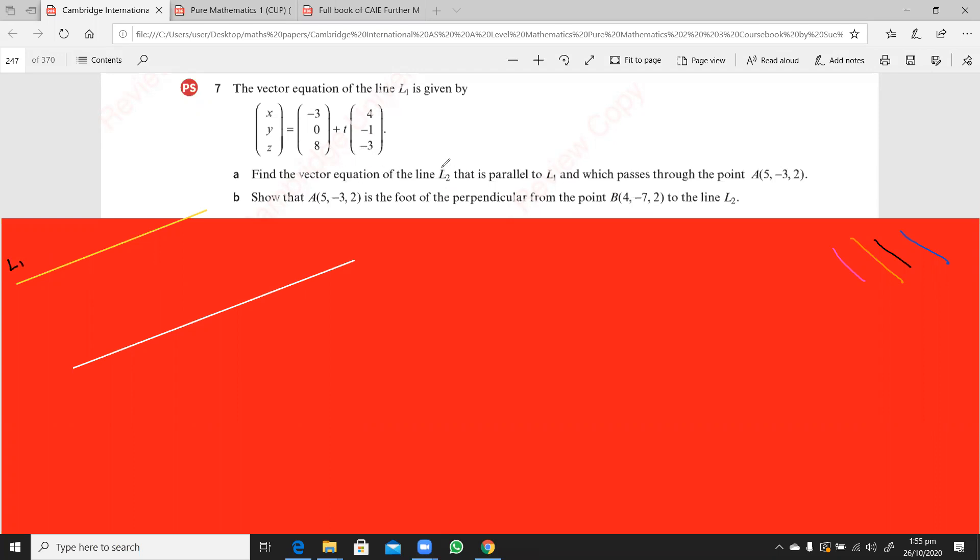Find the vector equation of the line L2 that is parallel to the line L1, and which passes through point A, which is 5, minus 3, 2. So if this is the line L2,